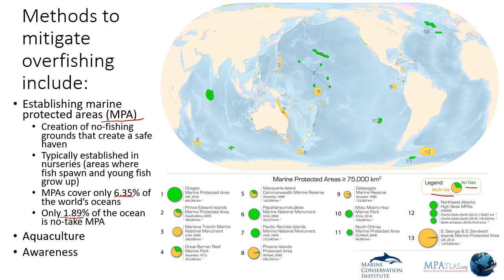The largest two no-take zones are Chagos in the Indian Ocean, set up by the United Kingdom, and a Hawaiian marine national monument around the northwest islands of Hawaii extending into the open ocean. The other mitigation strategies are aquaculture and public awareness, which can include public service announcements, signs, and documentaries to generate awareness among the public.